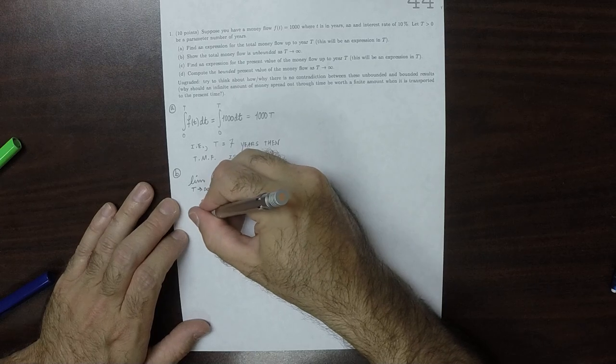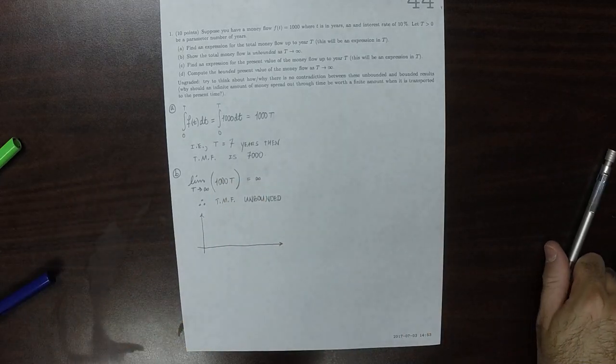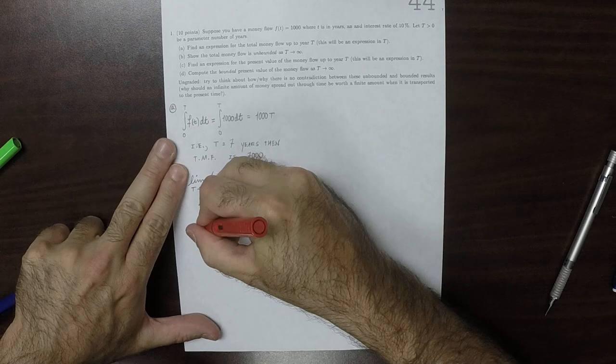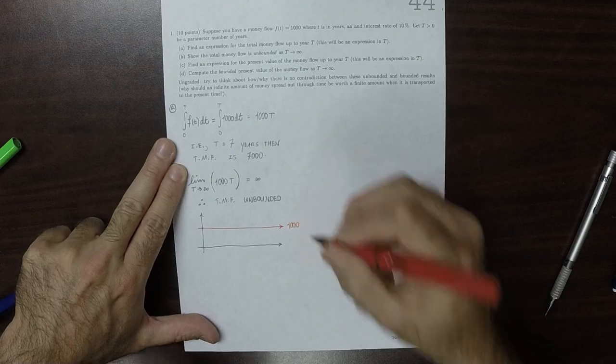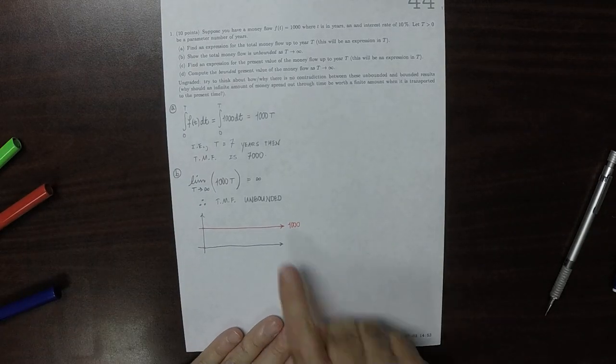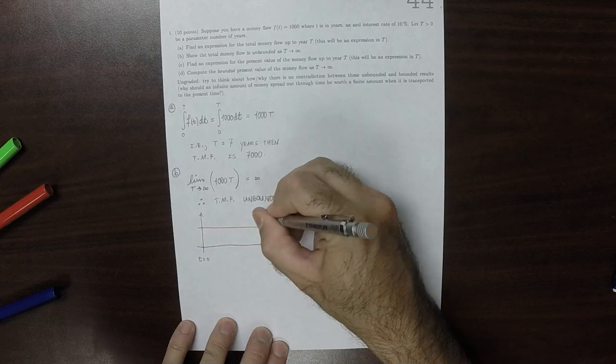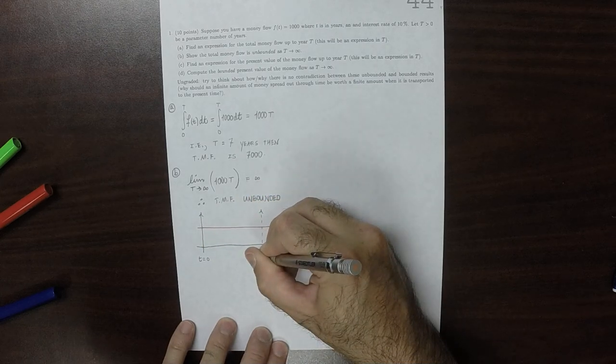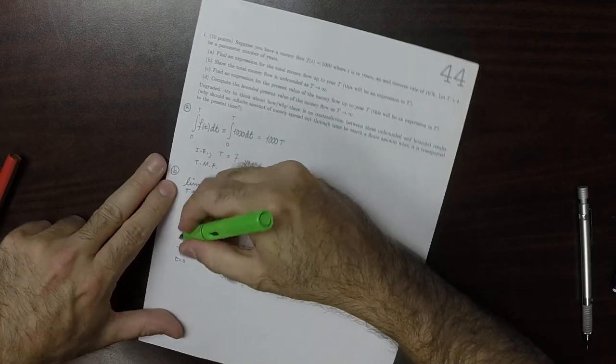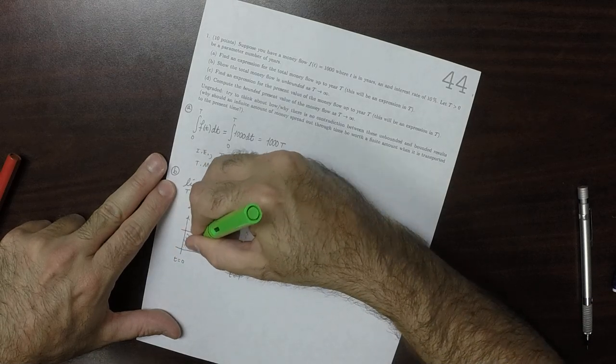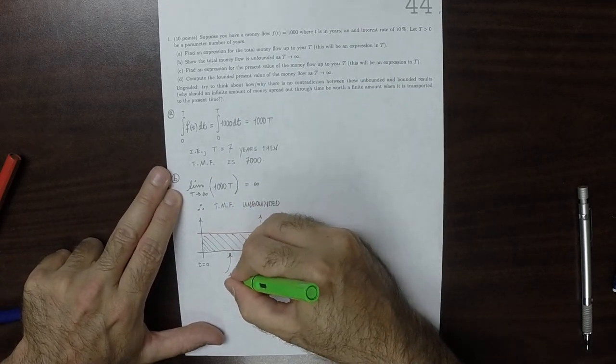That is, in the end, because what you're doing is you're integrating this constant, 1,000, per year, and you're saying from little t is zero to little t is big T. And what you're asking for is this area. So this area, obviously, is 1,000 t, 1,000 big T.